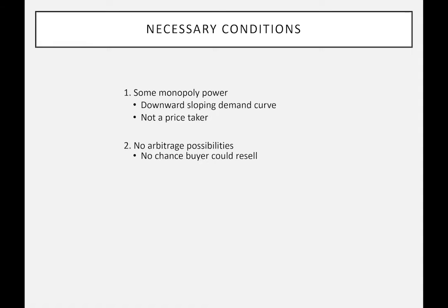The second condition is that there's no arbitrage possibility. That means the group buying at the lower price — say, local passport holders — can't purchase at the lower price and resell to people who would otherwise pay the higher price. For example, in the museum case, a local passport holder can't buy two tickets and give one to their foreign friend.